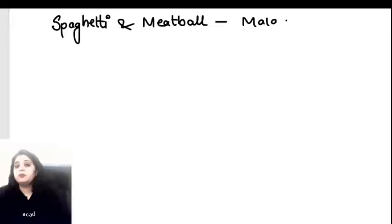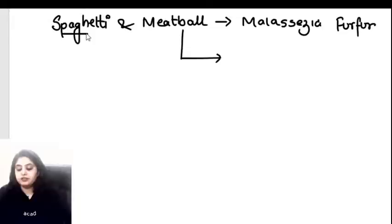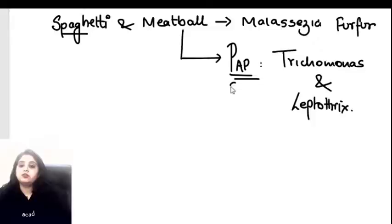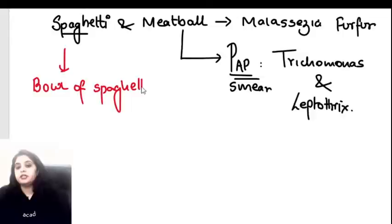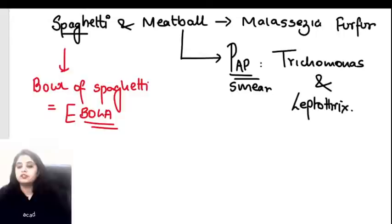On a Pap smear, Trichomonas and Leptothrix show the spaghetti and meatball appearance. Bowl of spaghetti appearance is seen with Ebola virus. One more question for NEET PG students: which fungal organism studied today shows a characteristic appearance on Pap smear?